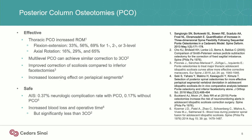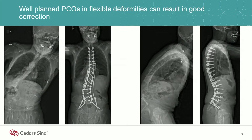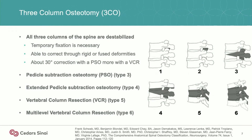There's slightly increased blood loss compared to just doing inferior facetectomies. But with well-planned surgery in a flexible deformity with multiple different disc spaces to work through, you can certainly get significant corrections just by the additive effect over multiple different levels, especially in a flexible spine and a flexible deformity.